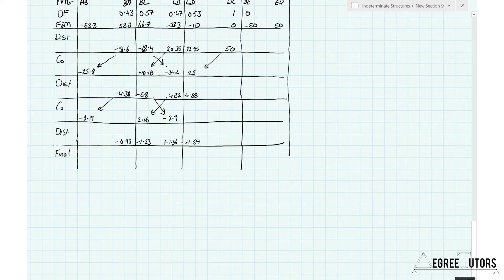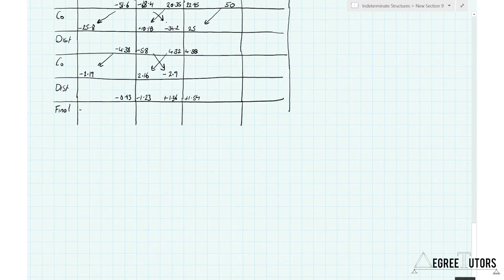At this point we evaluate and say joints are all balanced. If we do another round of carryovers, the amount by which we'd unbalance the joints is negligibly small, so we won't do another carryover — we've reduced things sufficiently. Summing the moments in each column to arrive at final moments: negative 81.29, negative 3.61, positive 3.61, negative 44.37, and positive 44.37. The cantilever balanced out at plus 50, minus 50, and plus 50.